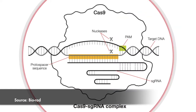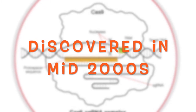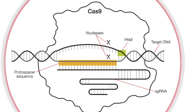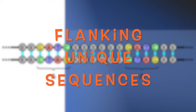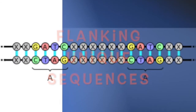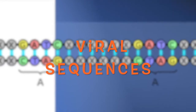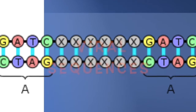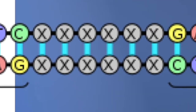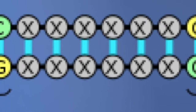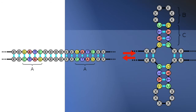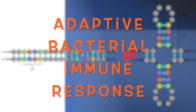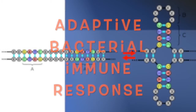The CRISPR-Cas9 system was discovered as a result of observations in the mid-2000s. Researchers studying bacterial sequences noticed repetitive palindromic sequences flanking unique sequences. These unique sequences were found to be representative of viral genomes that bacteria would retain if and when it survived an infection. It turns out these are adaptive immune responses from bacteria.